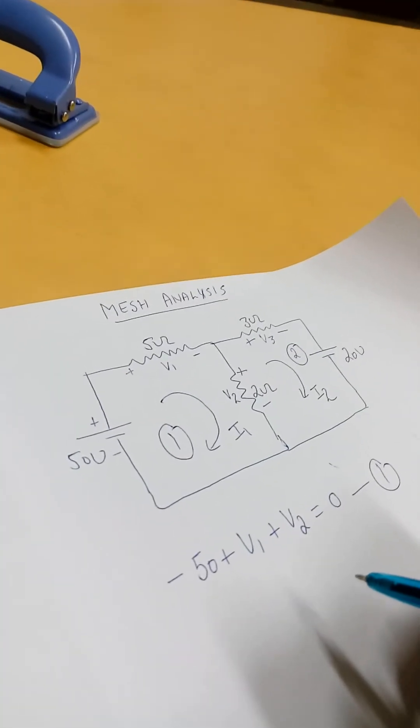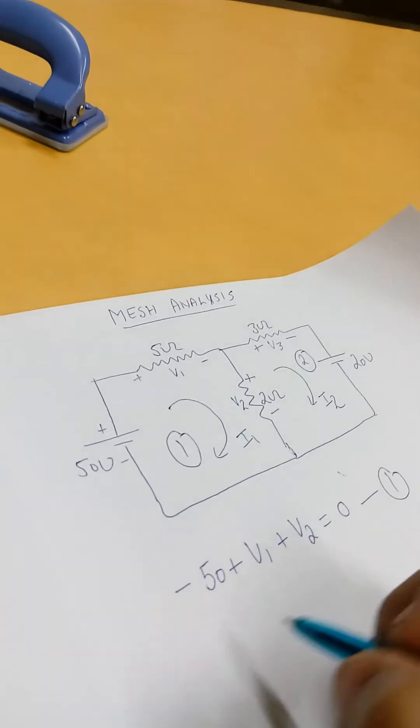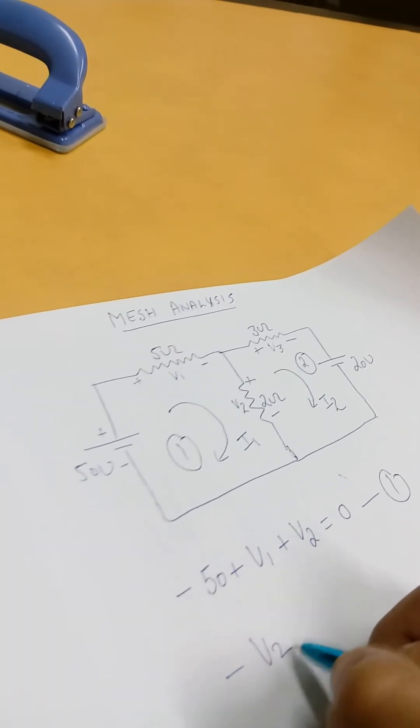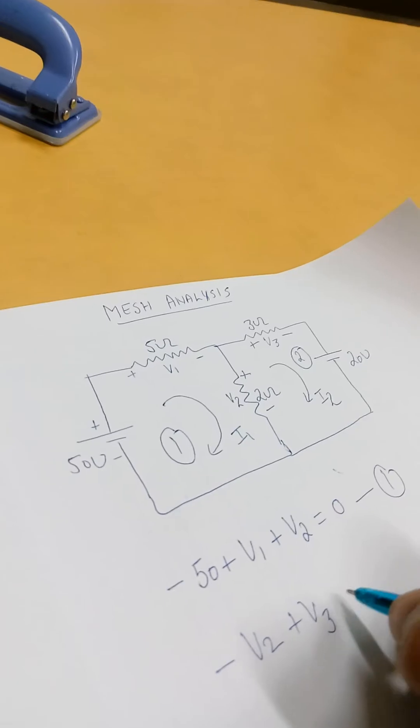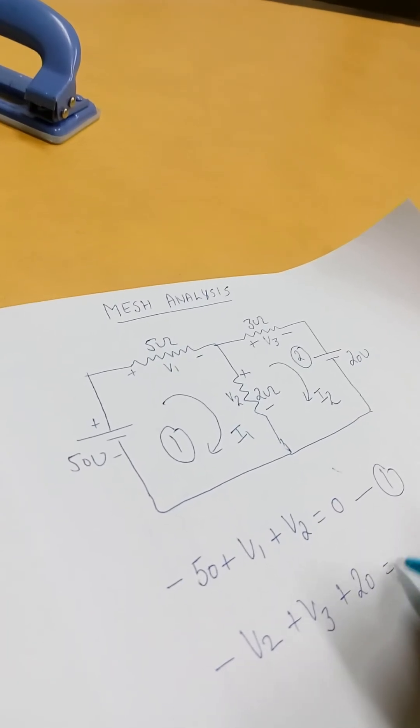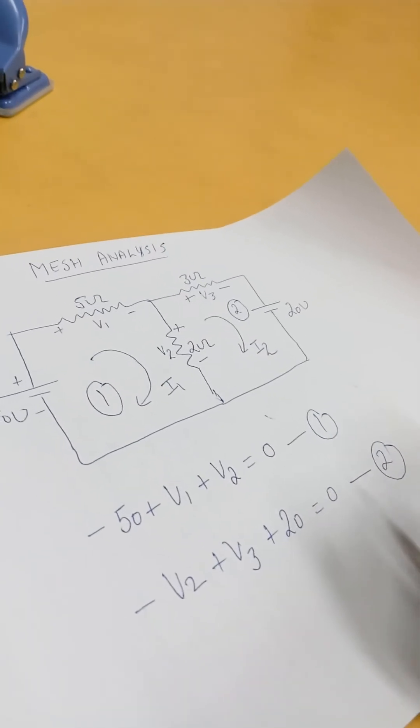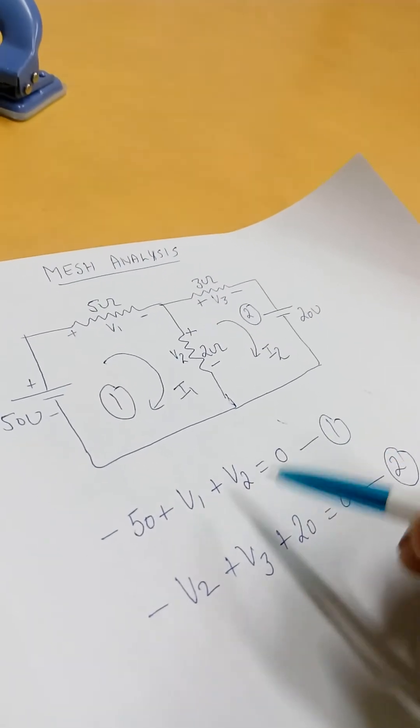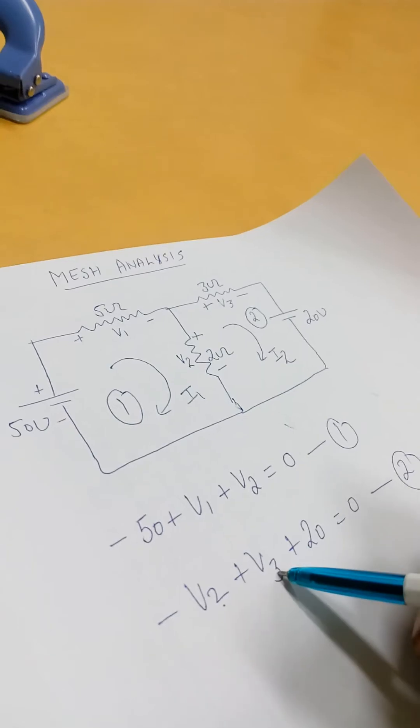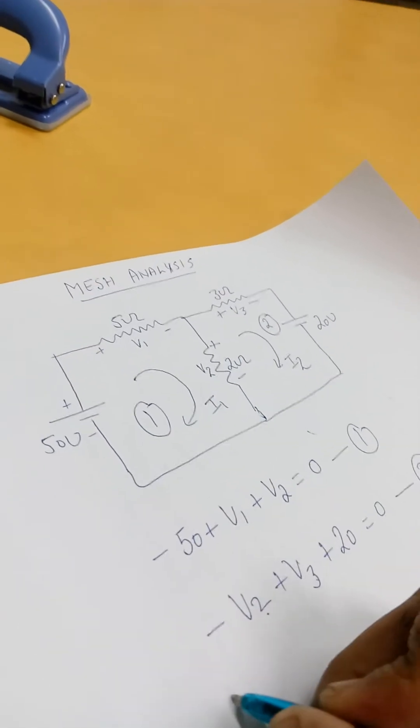Now coming towards the second loop, we will get minus V2 plus V3 plus 20 equals to zero. This is the second equation. Now we have to find the value of V1, V2, and V3.